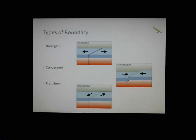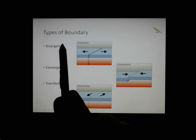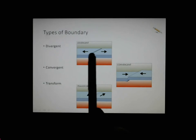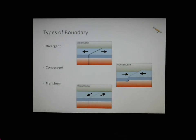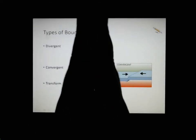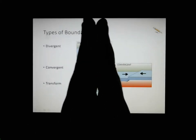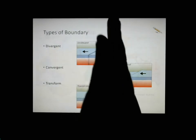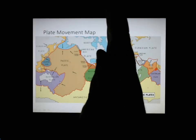Here are your three boundary types, and I'd recommend you learn the arrows that go with them. Divergent boundaries: the plates are moving apart — to diverge means to spread. The opposite is convergent: the two plates coming together. And transform boundaries: they're going past each other. If my two hands here are plate boundaries, one goes one direction and the other goes the opposite direction — they're sliding past each other.